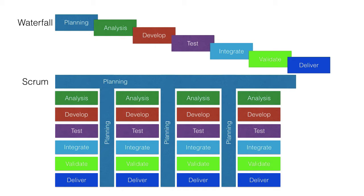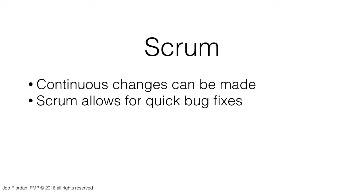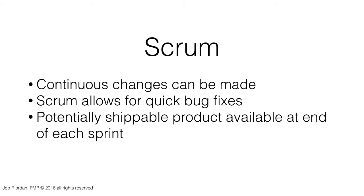So there you have it, a quick comparison between waterfall project management and Scrum product development. The Scrum framework allows for changes to be made to the requirements as the product is being developed. Testing at the end of each sprint allows for quick and cost-effective bug fixes, and a potentially shippable product is produced at the end of each sprint.